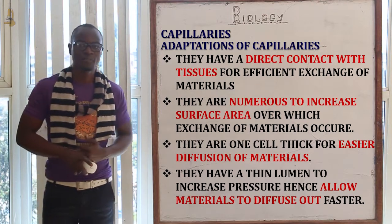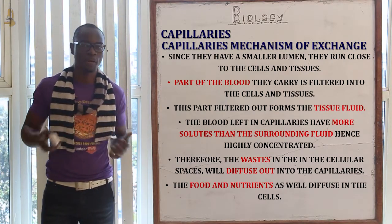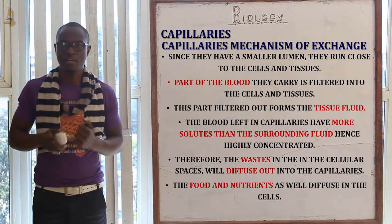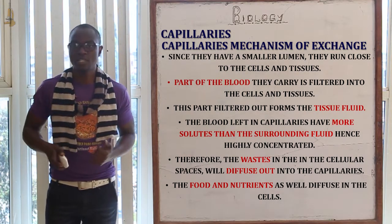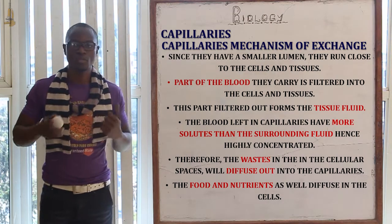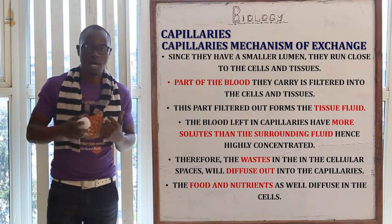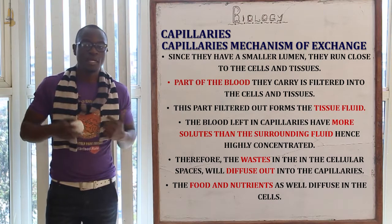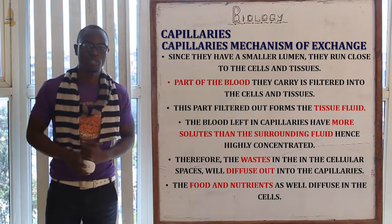Now let's look at the capillary mechanism of exchange — how exchange of materials happens between capillaries and tissue. Capillaries run close to the cells and have a very tiny lumen. Some blood is filtered out into the cell spaces and this filtered fluid is known as tissue fluid. Blood remaining in the capillaries has a higher solute concentration, so it is highly concentrated. Waste products in the cellular spaces diffuse out into the capillaries, while food and nutrients diffuse into the cells, and waste products from the cells enter the capillaries.